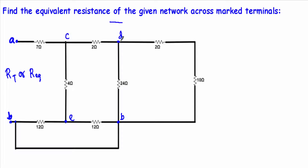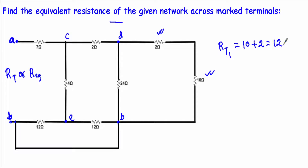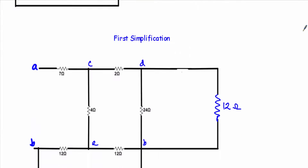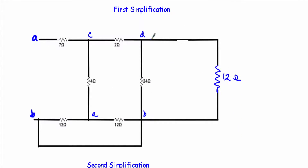Now we start simplification from the right side. Between points D and B, the 2 ohm and 10 ohm resistors are connected in series. I can replace these two resistors with a single resistor RT1. RT1 is the equivalent series resistance of 10 ohm and 2 ohm, which equals 12 ohm. This gives our first simplification: between points D and B we now have a single 12 ohm resistor.